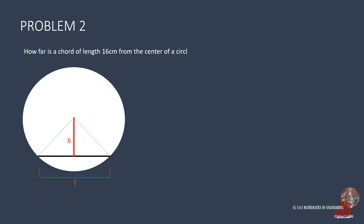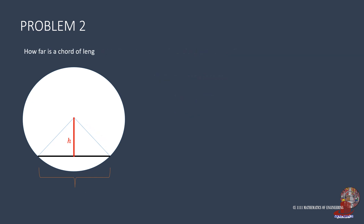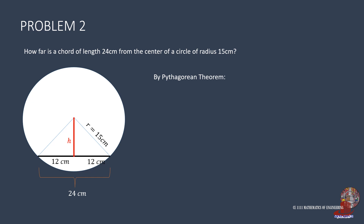With chord length 16 cm and radius 10 cm, the same concept applies: draw a perpendicular from the center to the chord. Using the Pythagorean theorem, h equals the root of 10 squared minus 8 squared, giving 6 centimeters. Another variation has chord length 24 cm and radius 15: take half the chord, which is 12, and compute root of 15 squared less 12 squared, where h is solved as 9 cm.